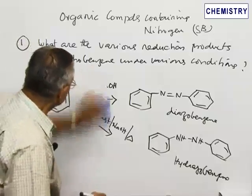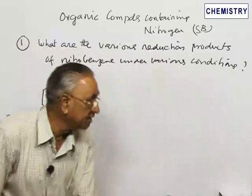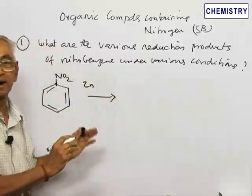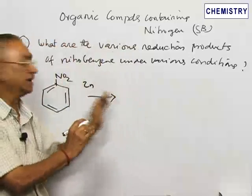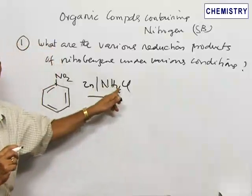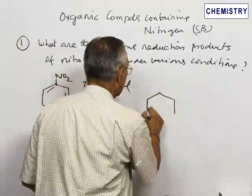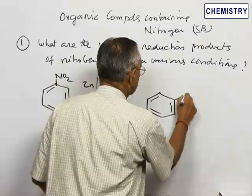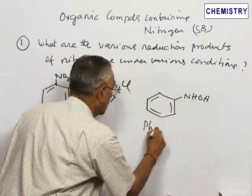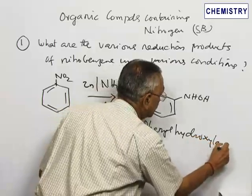It is also possible to reduce nitrobenzene using zinc as a reducing agent in neutral medium — specifically in the presence of ammonium chloride on mild heating. In this case, partial reduction occurs and nitrobenzene is converted to phenylhydroxylamine. The phenyl group is attached to a hydroxylamine group, giving phenylhydroxylamine as the product.